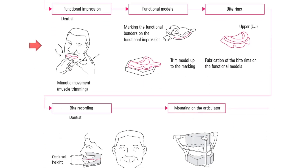With the help of the special tray, the dentist performs border molding, asking the patient to perform functional movements. Later, the secondary impression is made with secondary impression material such as zinc oxide eugenol. Thereafter, a master cast is made from the secondary impression, using the beading and boxing method, which develops the land area of the master cast.